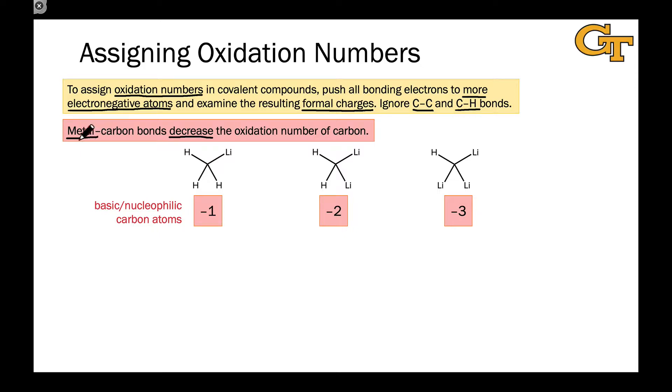This is because the metal is less electronegative than carbon. In thinking about oxidation number, we take the electrons in the carbon-metal bond—here the metal is lithium in each case—and push them toward the carbon.